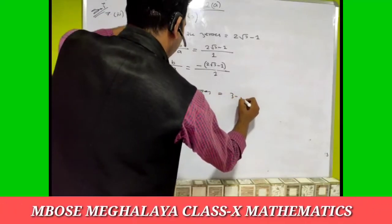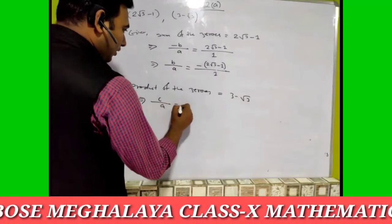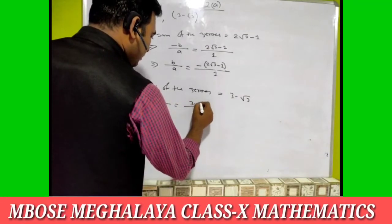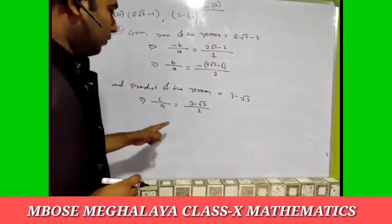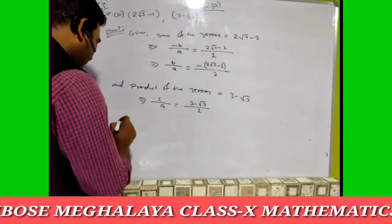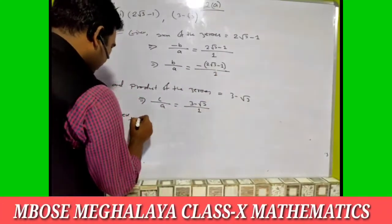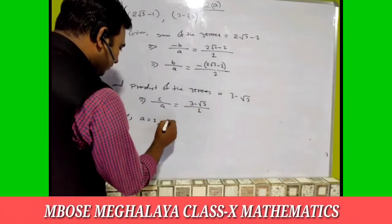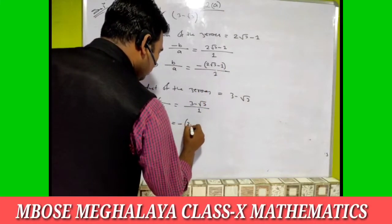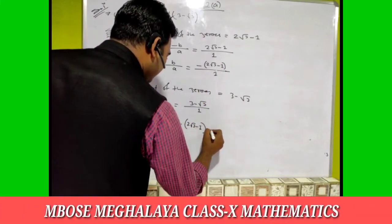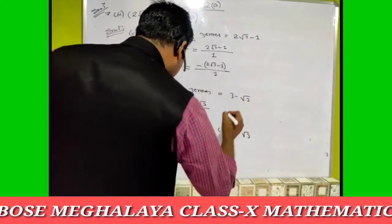Product of the zeros is three minus root three. The formula c by a equals three minus root three by one. In the first case a equals one, and in the second case also a equals one. So a equals one, b equals minus two root three minus one, and c equals three minus root three.